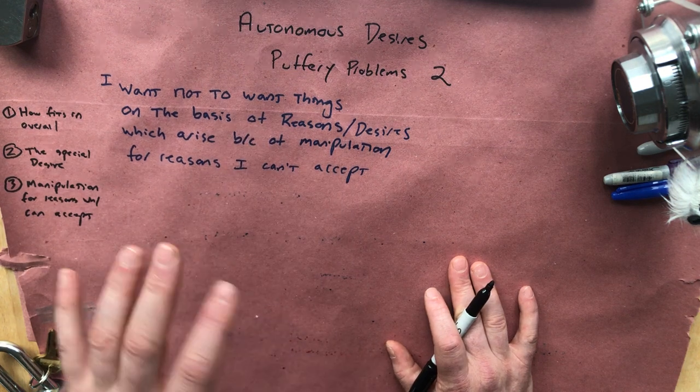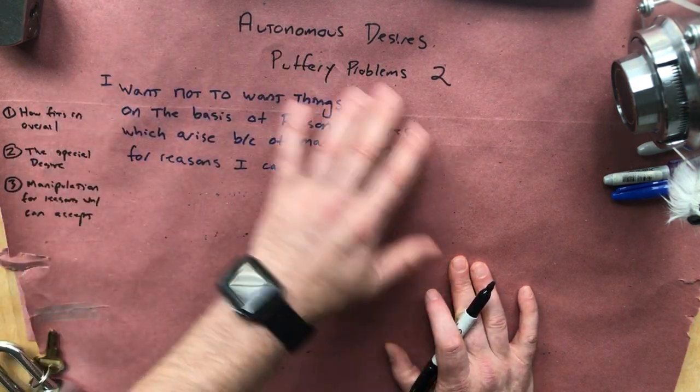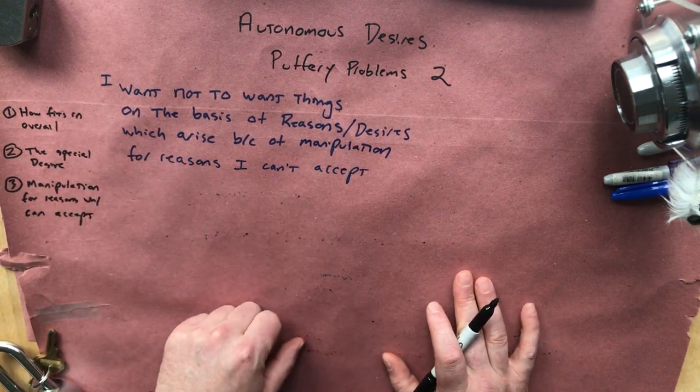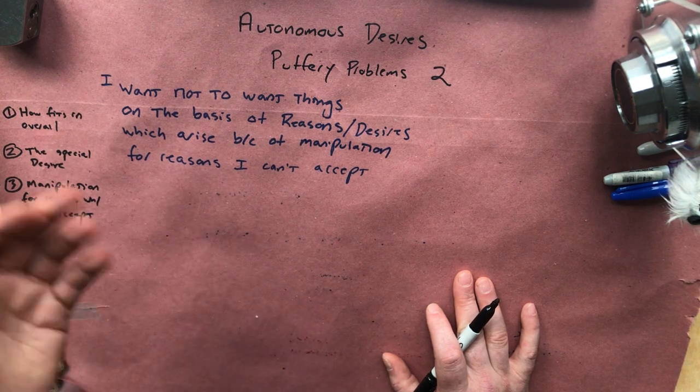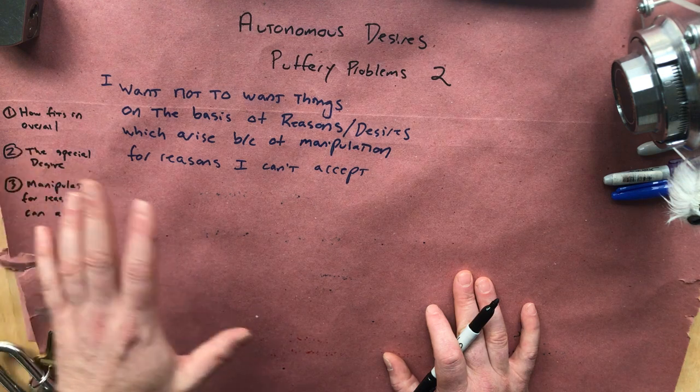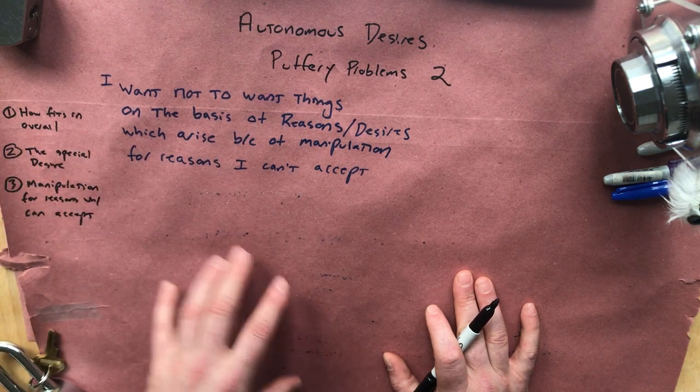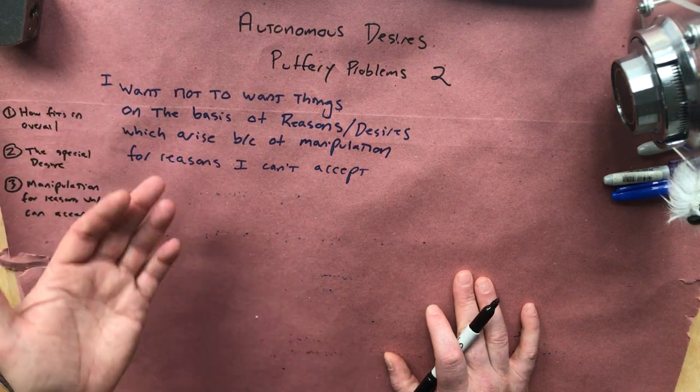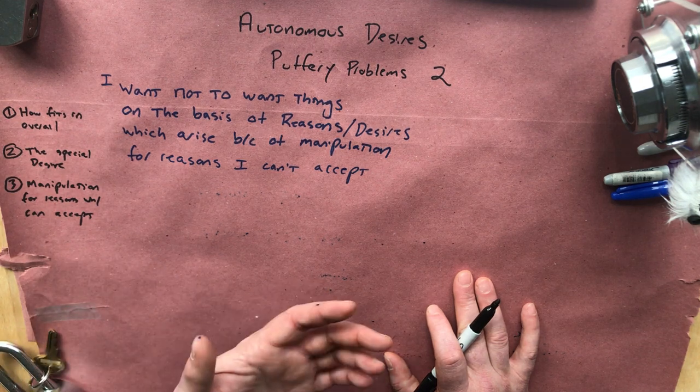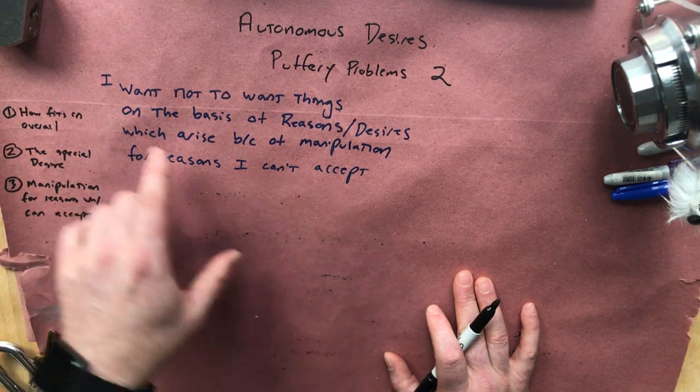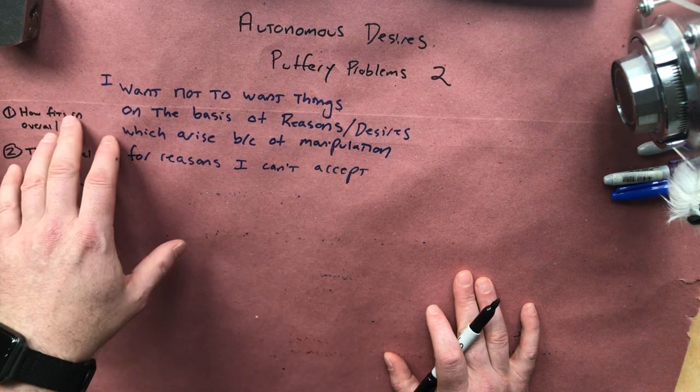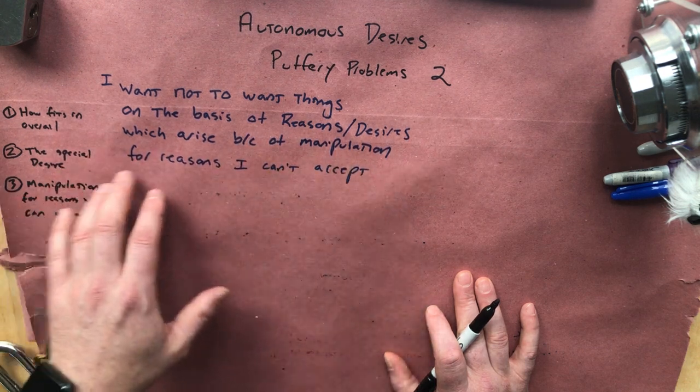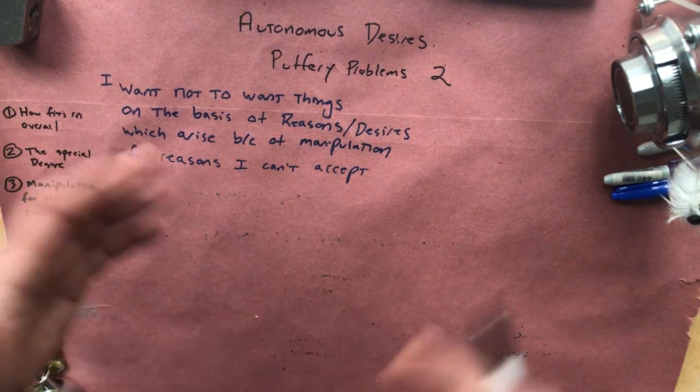And this, I haven't written it out verbatim the way he says it. And he says it a couple of different ways in different places. It's a mouthful. I wish I had a nice name for it. So if any of you have a good idea for a nice name for this, let me know. So the idea is that everybody who's autonomous is going to have something like this desire. You're going to, you basically don't want to be manipulated. You want to be making your own choices. And the way that plays out in this kind of situation is through this second order desire. So I want not to want things on the basis of reasons slash desires, which arise because of manipulation for reasons I can't accept.